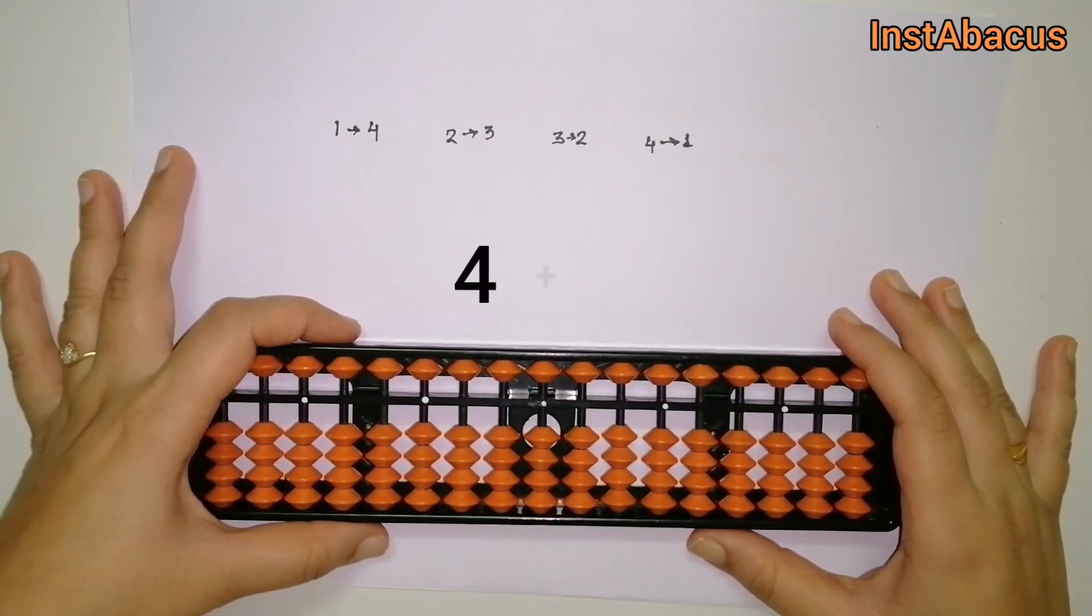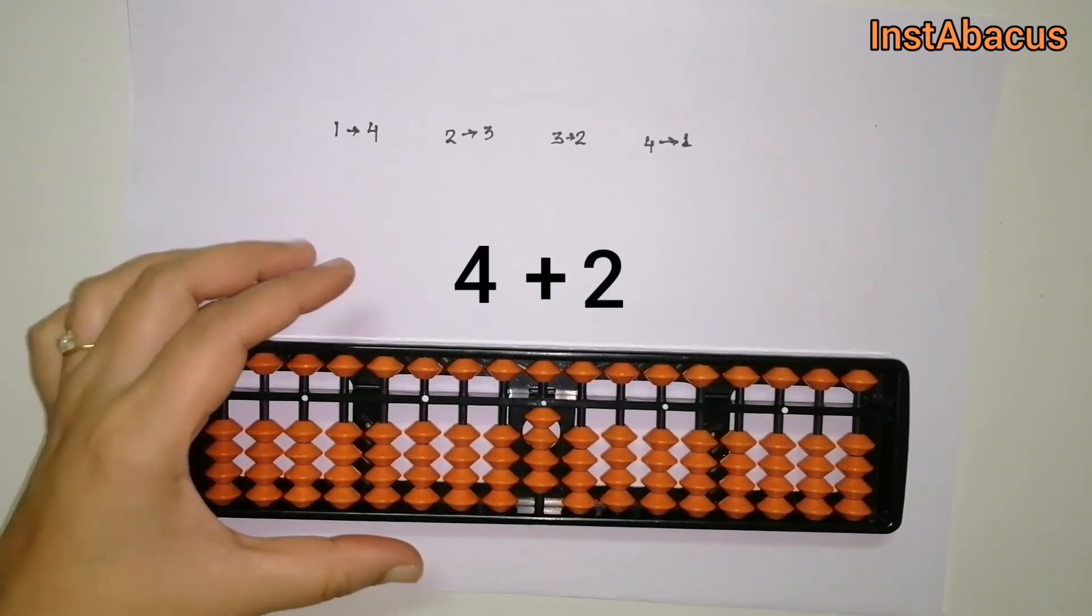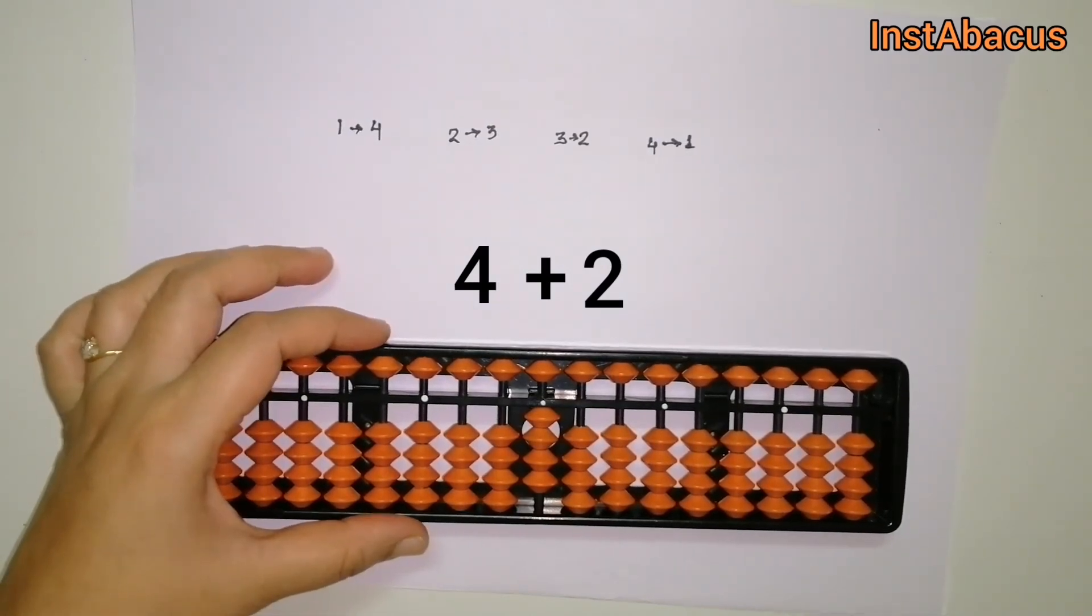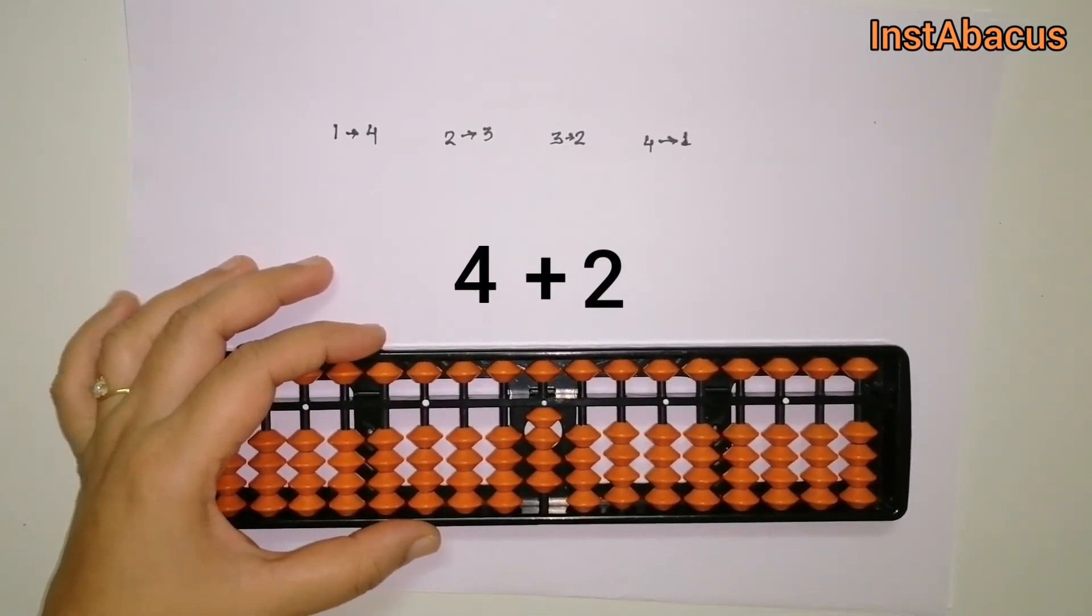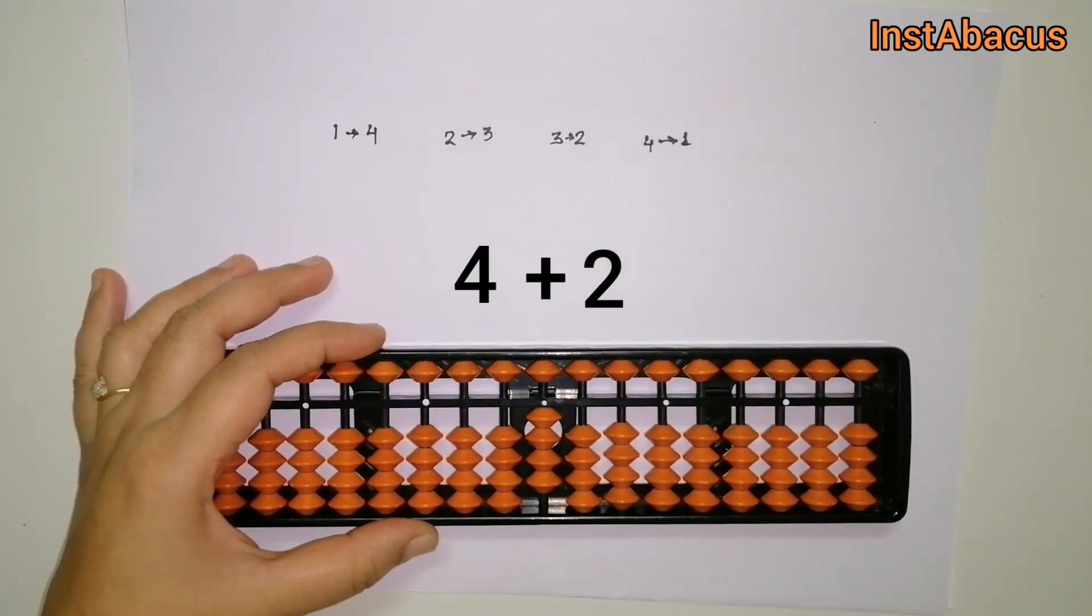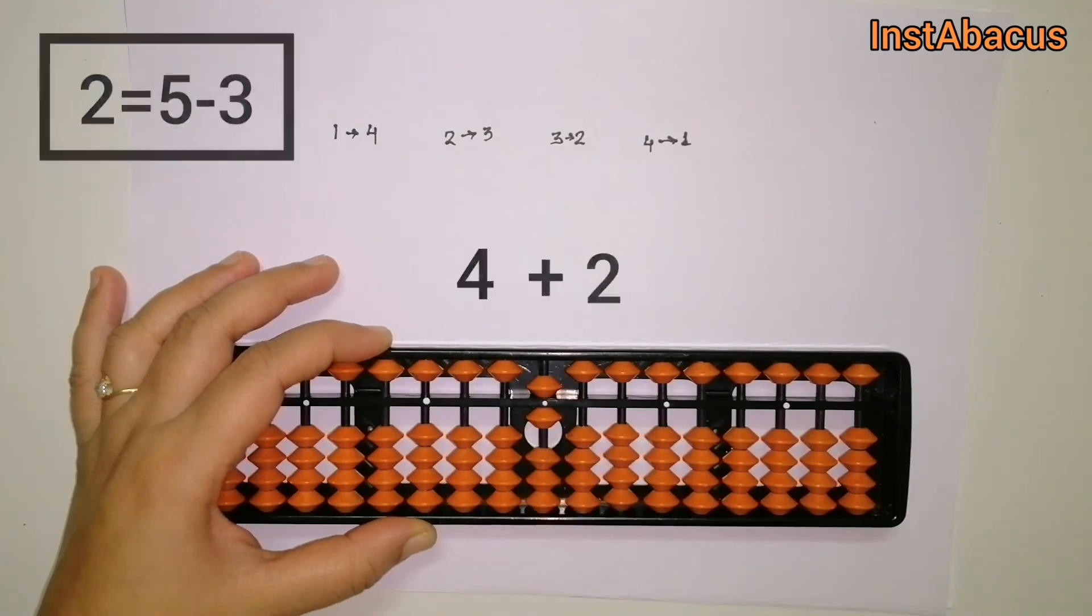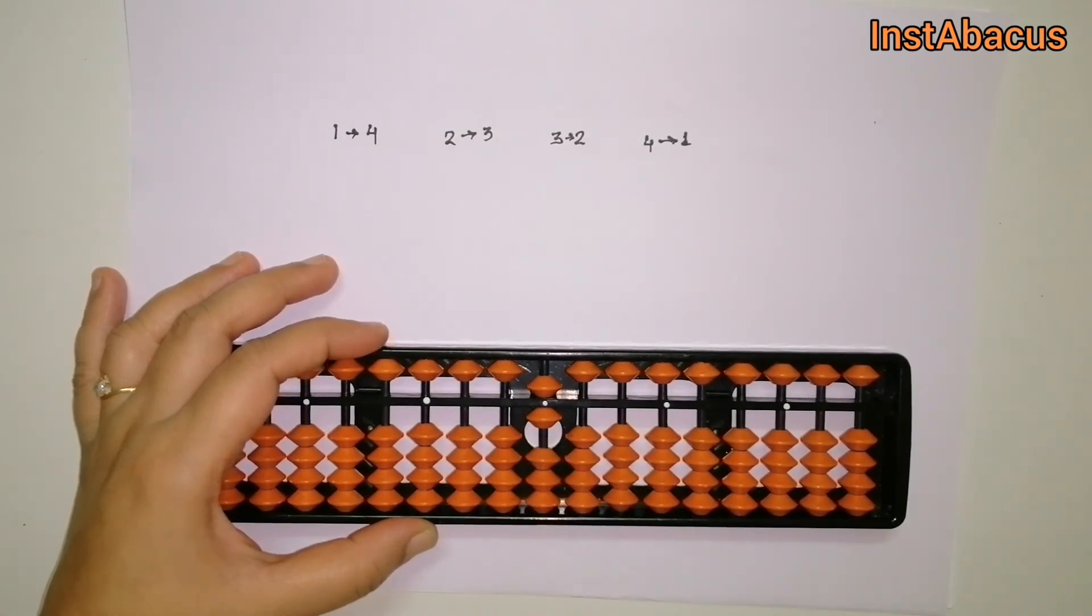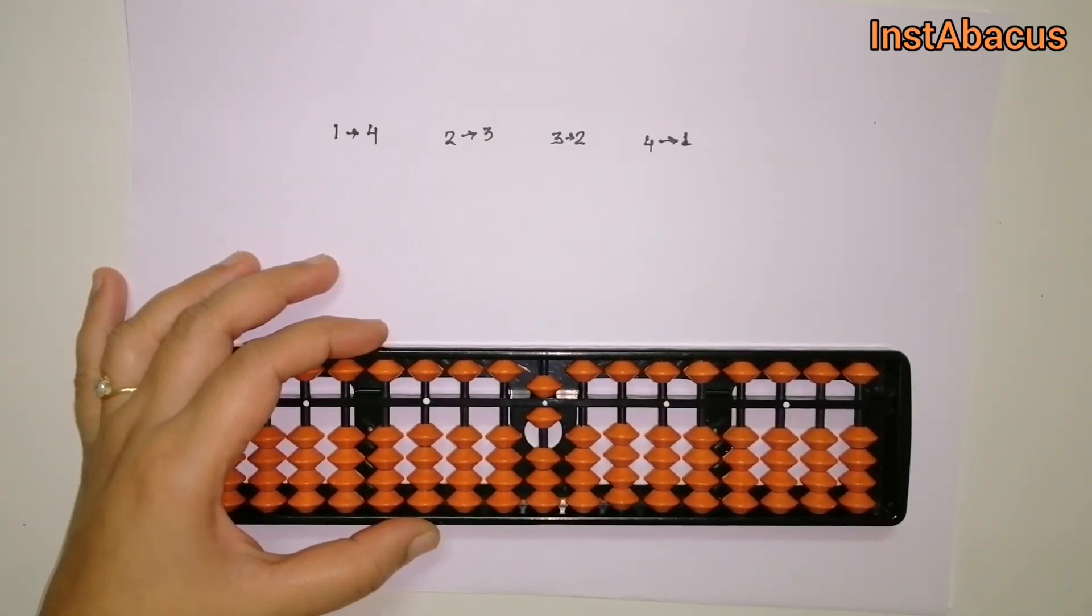4 plus 2. So this is 4 on our abacus, and we don't have enough earthly bits. We don't have two earthly bits to add 2, right? So again, we're going to ask for help from our small friend. The small friend of 2 is 3, right? So we're going to do plus 5 minus 3. Easy, isn't it? The answer is 6. That's right!